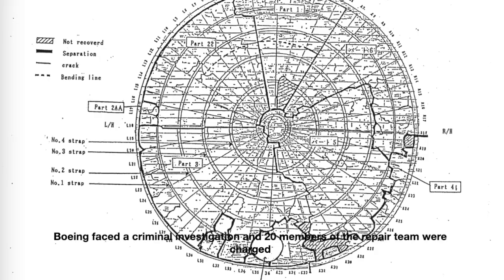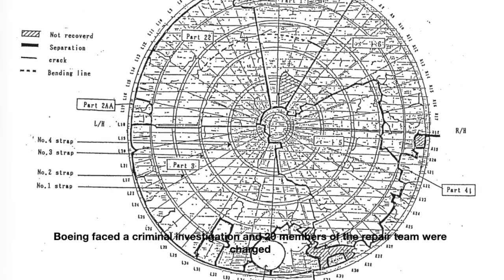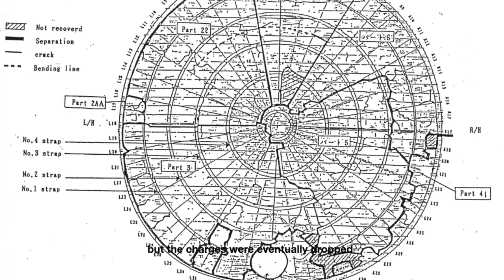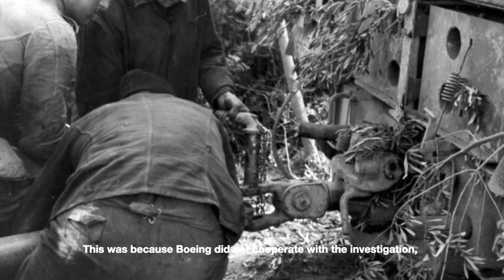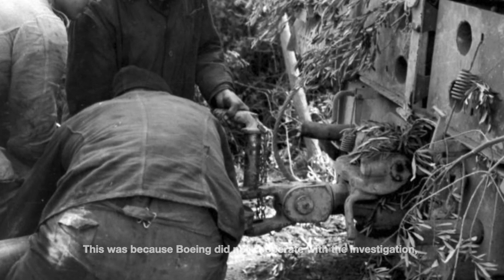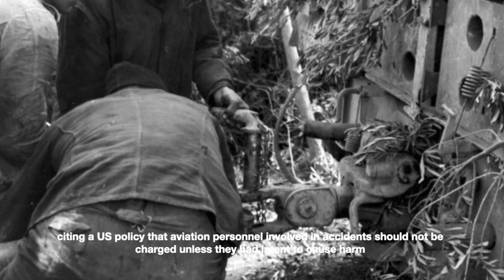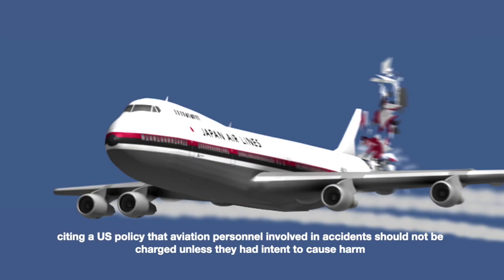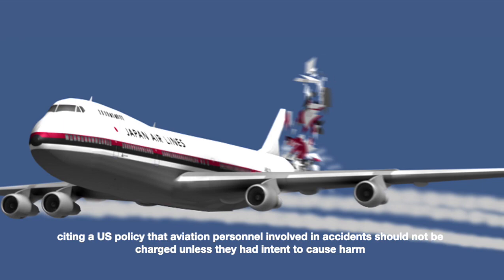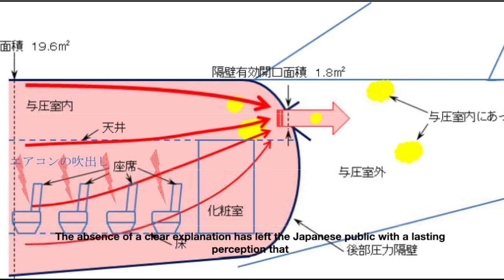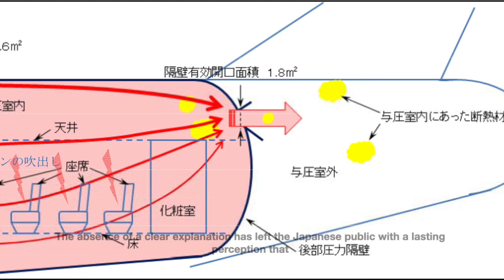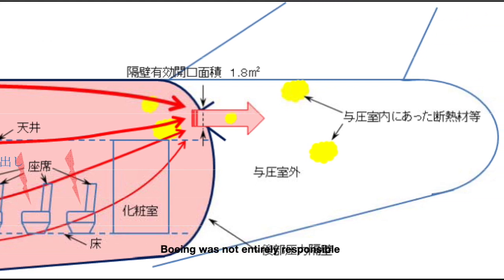Boeing faced a criminal investigation and 20 members of the repair team were charged. But the charges were eventually dropped. This was because Boeing did not cooperate with the investigation citing a US policy that aviation personnel involved in accidents should not be charged unless they had intent to cause harm. The absence of a clear explanation has left the Japanese public with a lasting impression that Boeing was not entirely responsible.